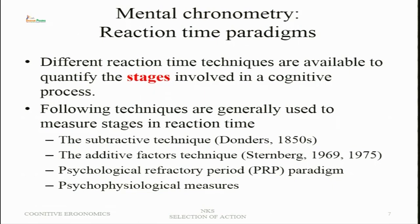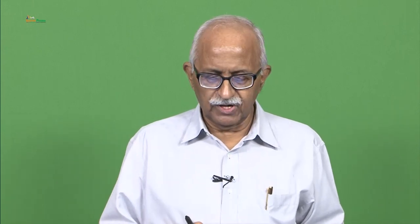Psychophysiological measures relate behavioral measures of reaction time to brain processes. The idea is to locate in different regions of the brain how a particular behavioral action is controlled — where it is located and how it is controlled by that particular part.